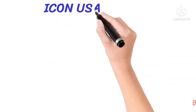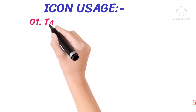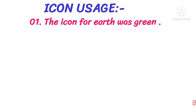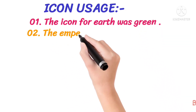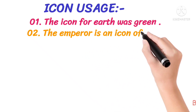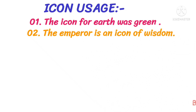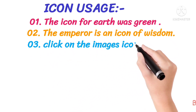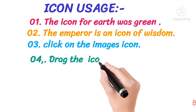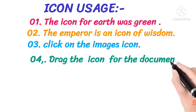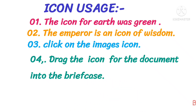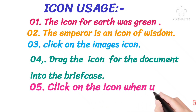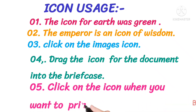Icon usage. Number 1: The icon for Earth was green. Number 2: The emperor is an icon of wisdom. Number 3: Click on the images icon. Number 4: Drag the icon for the document into the briefcase. Number 5: Click on the icon when you want to print.